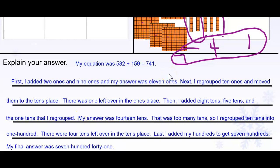Now, this is what your explanation should look like. My equation was 582 plus 159 equals 741. First, I added two 1s and 9 1s, and my answer was 11 1s. Next, I regrouped 10 1s and moved them to the 10s place. There was 1 left over in the 1s place. Then, I added 8 10s, 5 10s, and the 1 10s that I regrouped. My answer was 14. That was too many 10s, so I regrouped 10 10s into 100. There were 4 10s left over in the 10s place. Last, I added my 100s to get 700. My final answer was 741. Your explanation should look something like this.